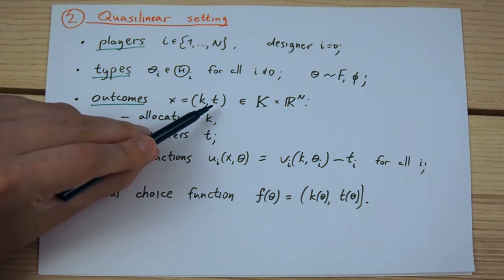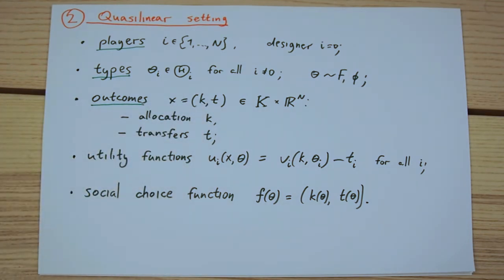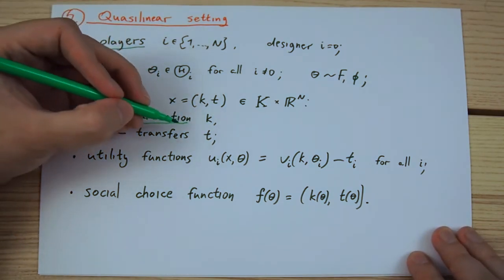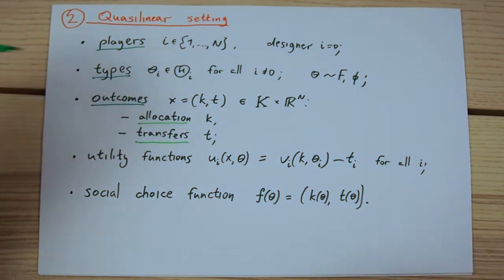The second element is a vector of transfers from all players. And this is the big addition in the quasi-linear setting. The easiest interpretation of transfers is to see them as monetary transfers or payments from the players to the mechanism. But any other kind of numeral good instead of money or, more broadly, any other way to provide fine-grained incentives to players would work just as well.